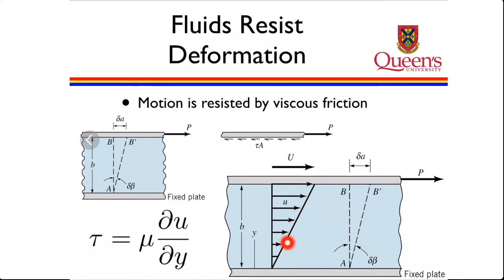The shear stress everywhere along this velocity gradient depends on the gradient of the velocity. The slope of this velocity line with y, and the viscosity. So that shear stress is going to tell us what the viscous forces are typically.